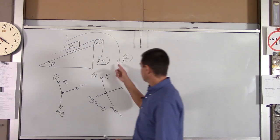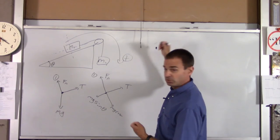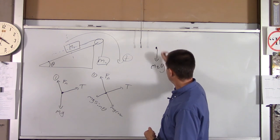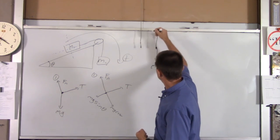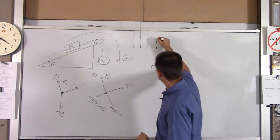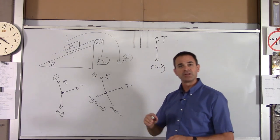For block two, it's a little easier. Down's positive. I'll draw that FBD here. There's only two forces acting on it. There's M2G, and there's tension. And since I'm guessing that the block is going to accelerate down, I'll draw that tension force a little bit smaller than M2G.